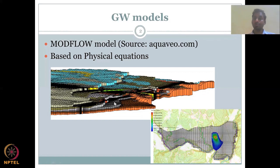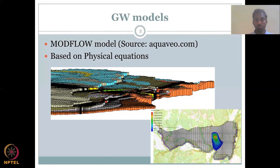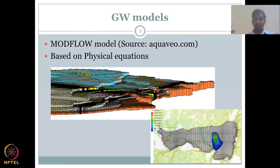Most groundwater models for study or research purposes have three layers. From the ground surface you have the unconfined aquifer, then one or two impermeable layers, then a confined aquifer, and another confined aquifer. Three layers is generally okay to model. Otherwise, you need bigger computing software or even a more powerful computer to run these models.